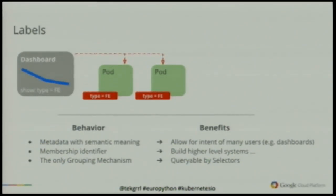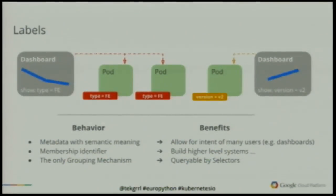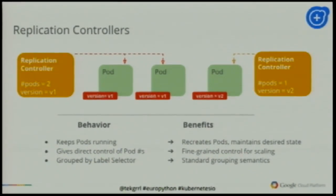Labels are basically the single grouping mechanism within Kubernetes. This allows us to group things so we can build applications like a dashboard. We have a running pod, we give it a label — labels are key-value pairs. In this case, type equals FE. Completely arbitrary metadata. We put labels on pods and can build a dashboard application that uses the API to say: give me the pods with this label, and show me their status. We can have different labels for different pods — a version 2 pod with a different dashboard monitoring those. Pods can have many labels.